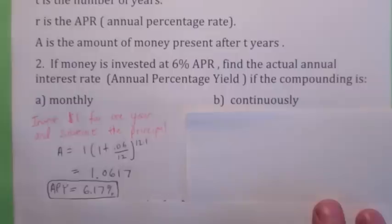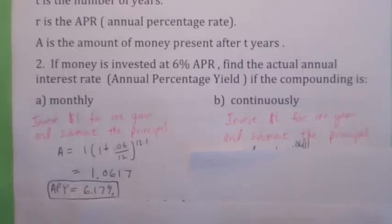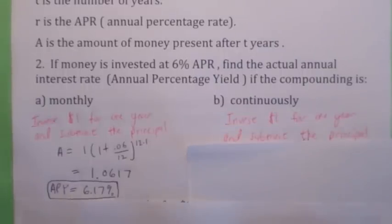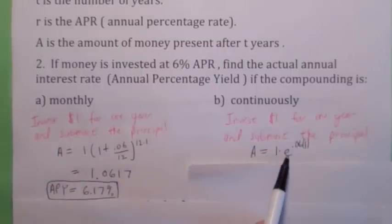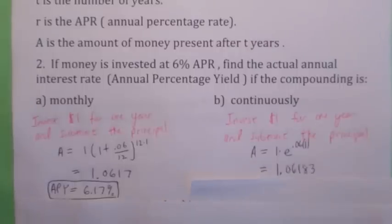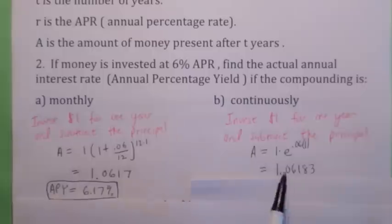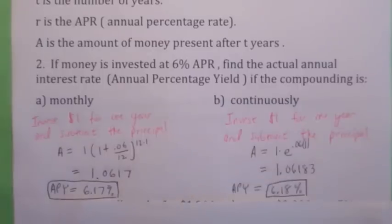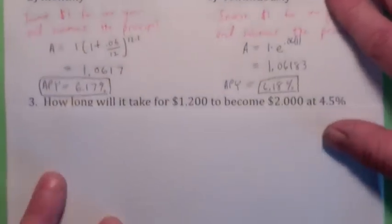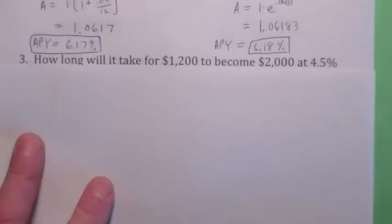So if it was continuously, would you think it would be bigger than this, or smaller than this? My guess would be slightly bigger, but not much. How do you do it? Just invest $1 for one year at that .06 APR, and then subtract off the dollar. So the amount of money you have is A equals 1, E to the .06 times 1, which comes out to be this. And you can see the actual interest rate sitting right here. When you subtract off the dollar, you get about 6.18%. So it's not much bigger, which is what we thought. Okay, let's do a few more using those compound interest formulas.